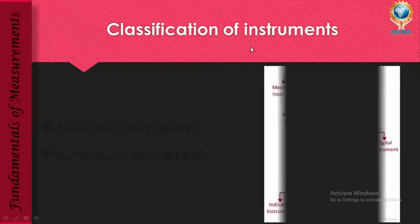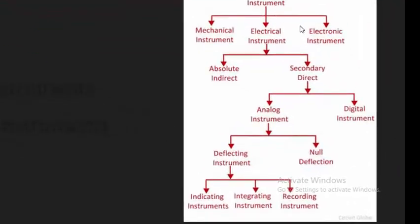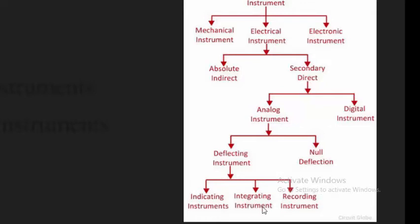Now coming to the classification of instruments — there are three different classifications: mechanical, electrical, and electronic. Electronic instruments require less voltage; electrical instruments can operate at 230 volts; mechanical instruments are rotational and need mechanical force. We are concerned with electrical parameters, so we focus on electrical instruments. Electrical instruments are classified into two types: absolute or indirect instrument, and secondary or direct instrument. Secondary instruments are further classified into analog and digital, and analog into deflecting and null deflection. Deflecting instruments are classified into indicating, integrating, and recording instruments.